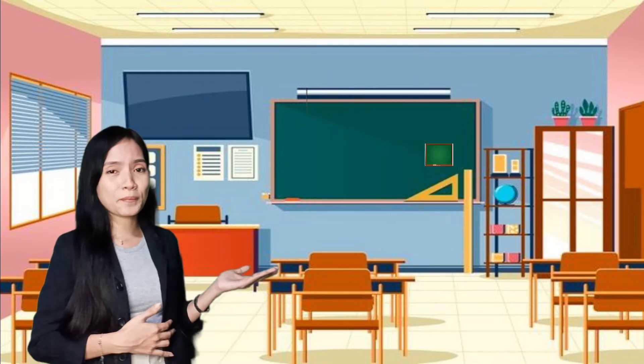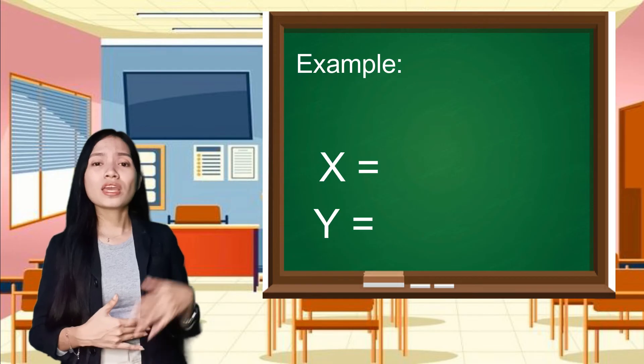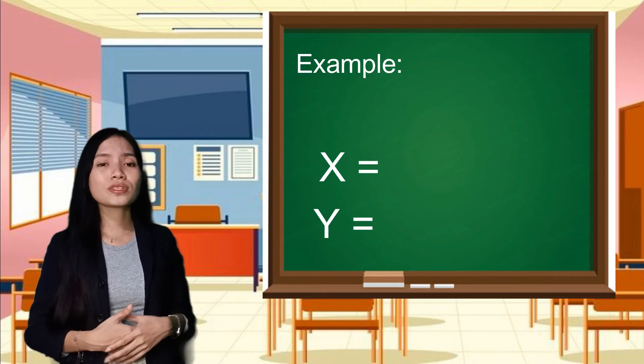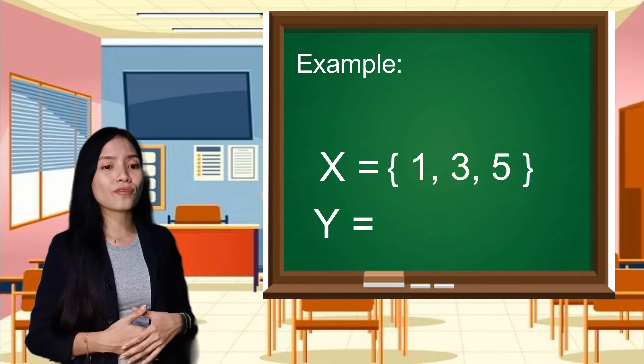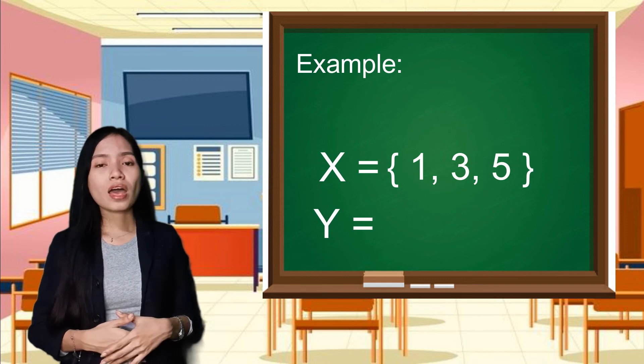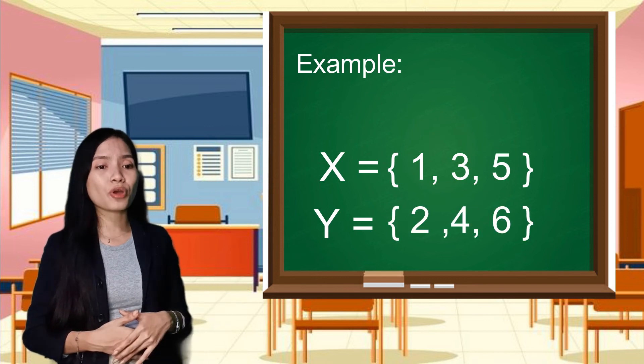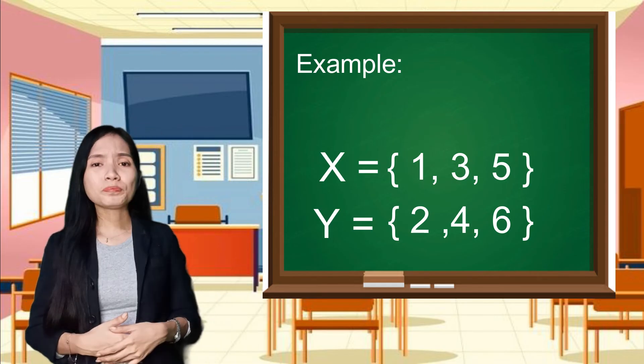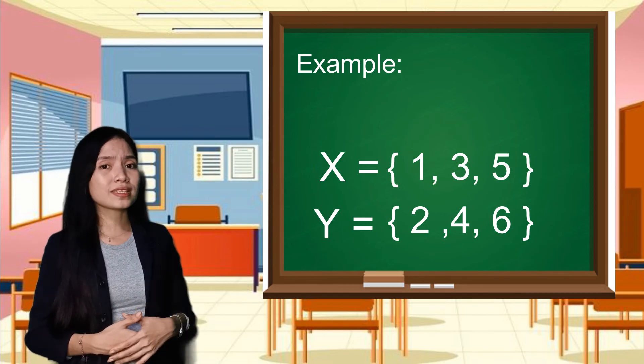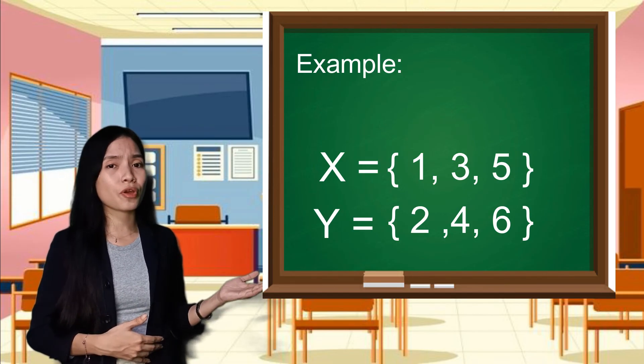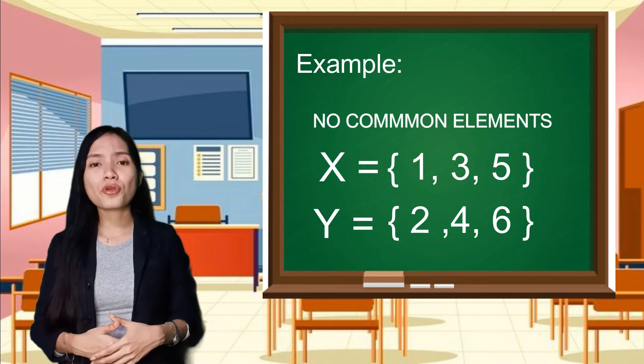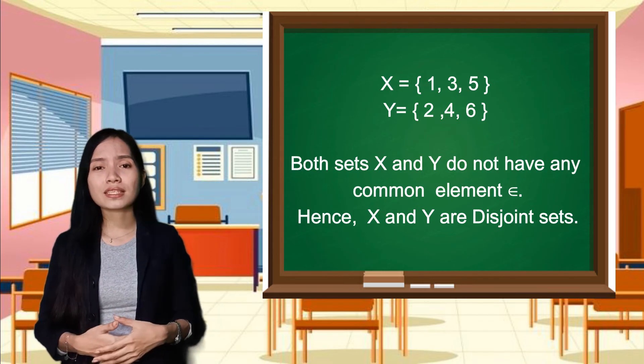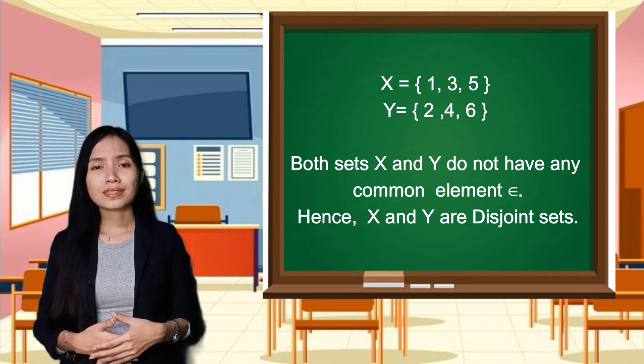So here is an example of a disjoint set. We have here set X and set Y. So in set X, we have numbers of one, three, and five. And in set Y, we have elements or numbers of two, four, and six. So obviously, as we could see in each set, let us check the numbers if there are no the same elements or numbers. We could therefore conclude that this is an example of a disjoint set.